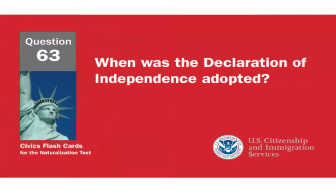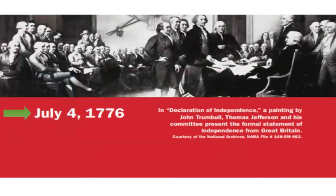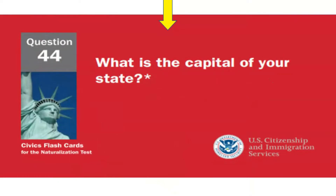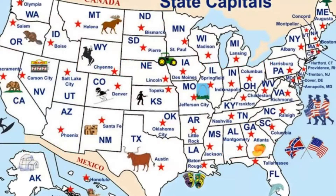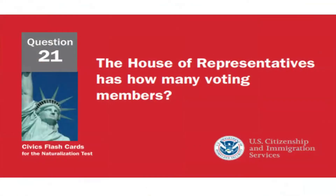When was the Declaration of Independence adopted? July 4th, 1776. What is the capital of your state? In front of you, you have a map with all 50 states. Please locate your state and you will find the answer — the capital of the state is next to the star. For example, if you live in California, the capital is Sacramento; if you live in Florida, the capital is Tallahassee. The House of Representatives has how many voting members?